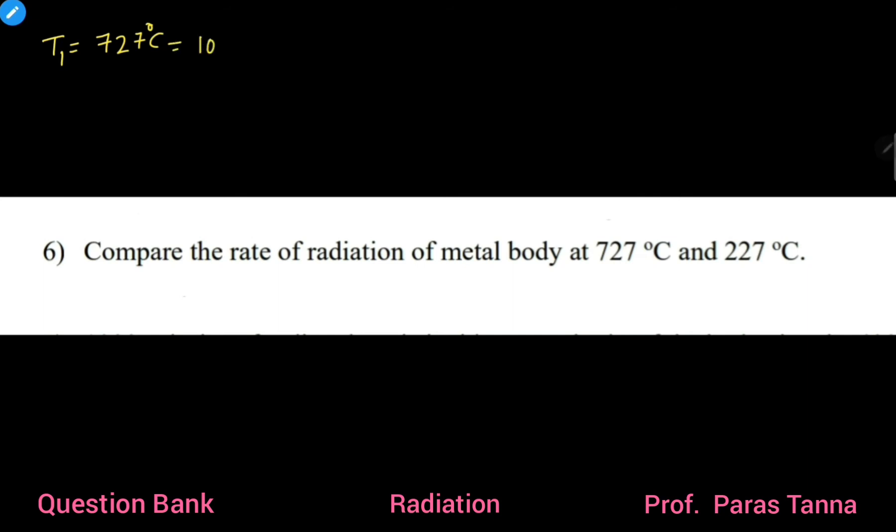that is 1000 Kelvin. Second temperature of the same body, let's say T2, equals 227 degrees Celsius, that is 227 plus 273, that is 500 Kelvin.